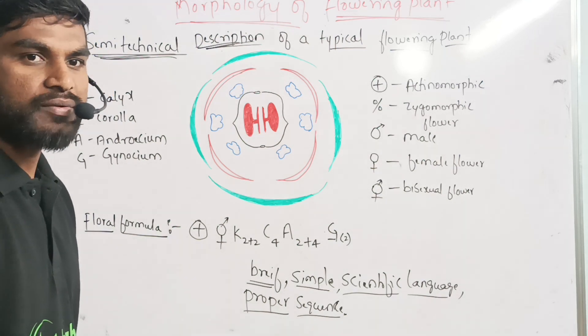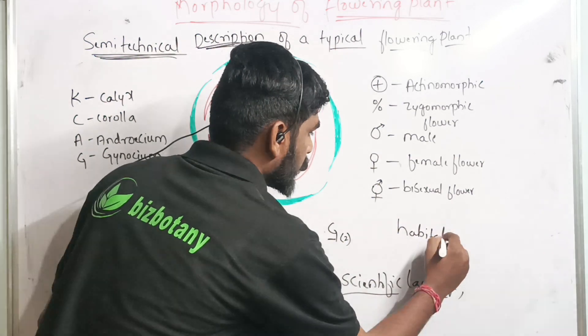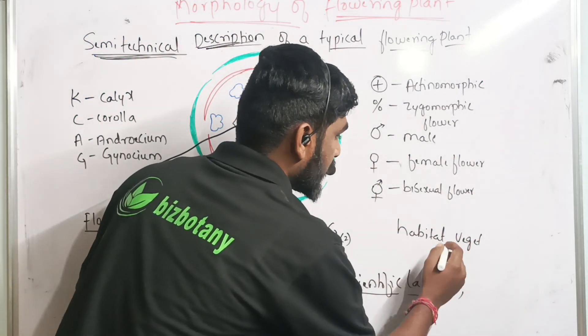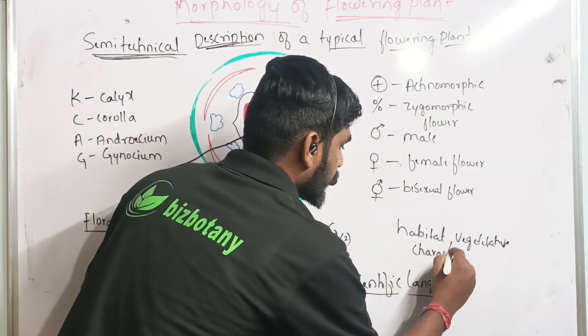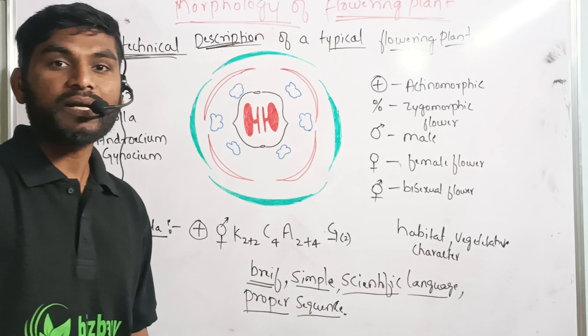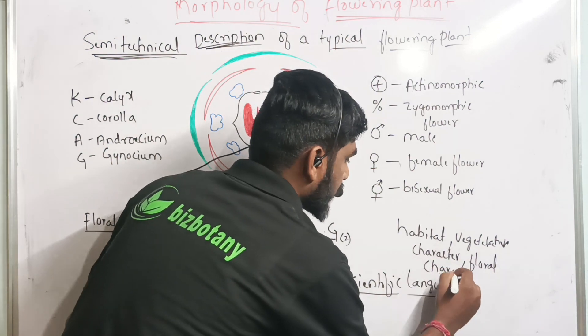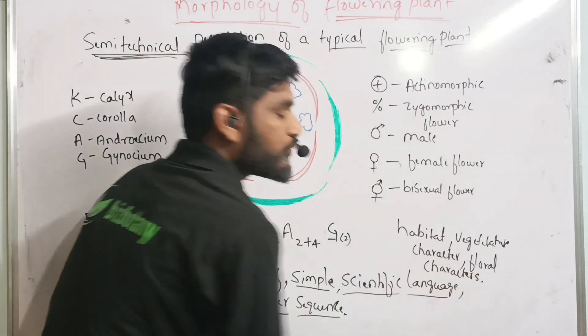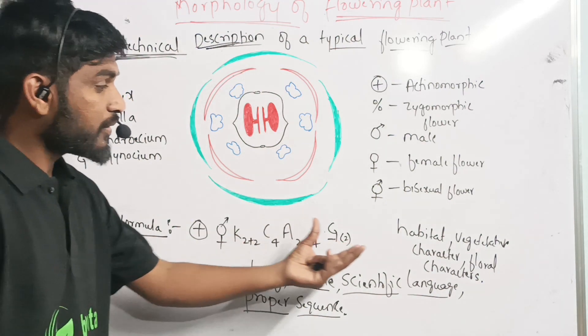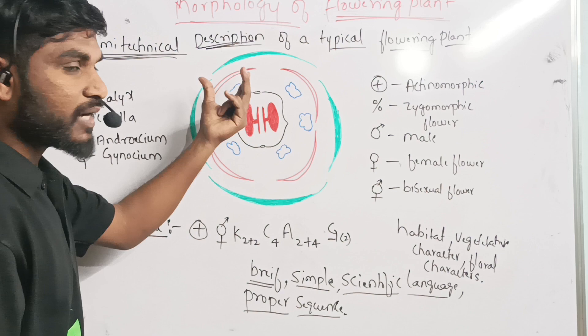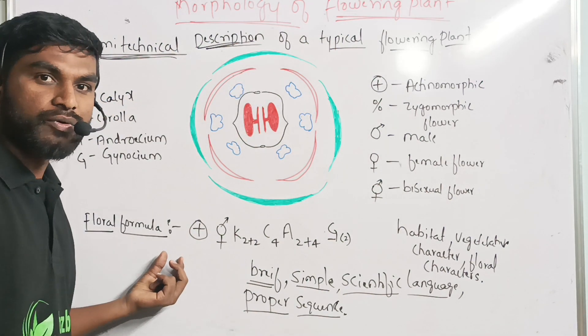The description of flower will start with the habitat of the flower, vegetative character of the plant, and floral characters. After floral characters, it comes to the floral parts of the plants. Floral parts of the plants will be described. After floral parts, we describe the flower with the help of floral diagram as well as floral formula.